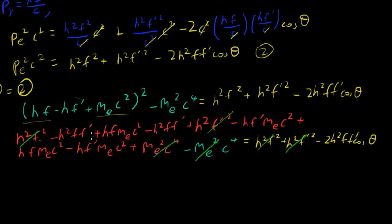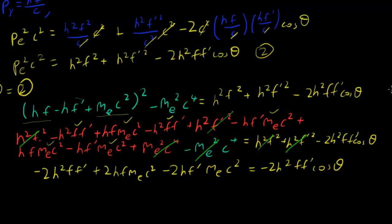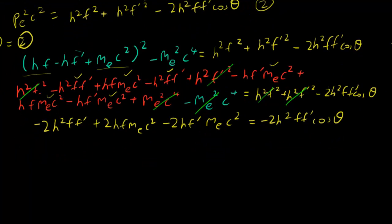Let's rewrite this whole thing out. We know that this and this are equal, so they would add up to 2h²ff'. And we can see this one and this one, so it would be plus 2hf · mₑc². Lastly, we have minus 2hf' · mₑc², all equal to negative 2h²ff' cos θ. Tedious part over.